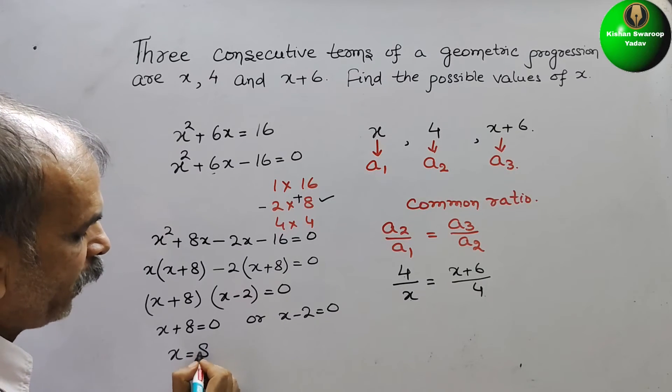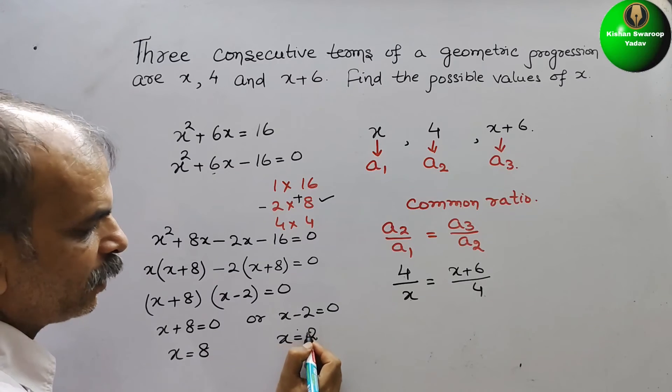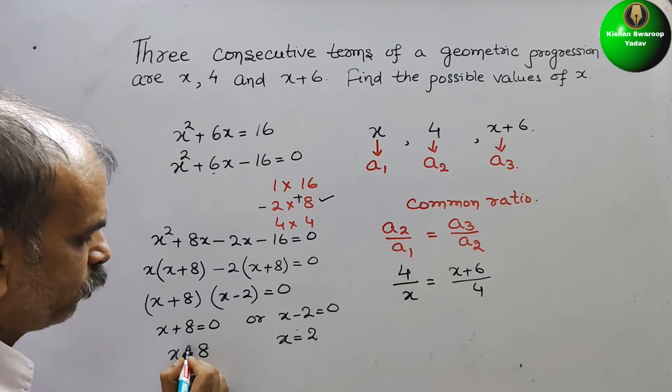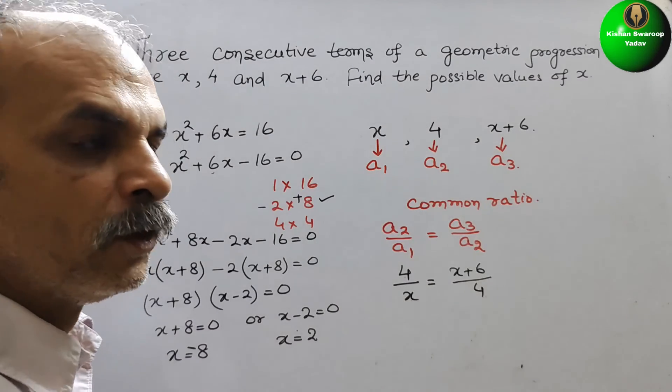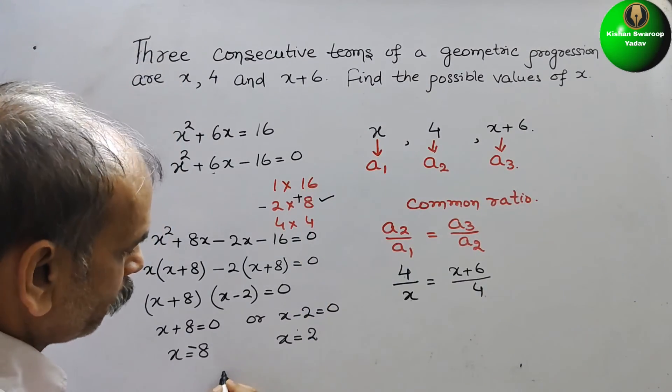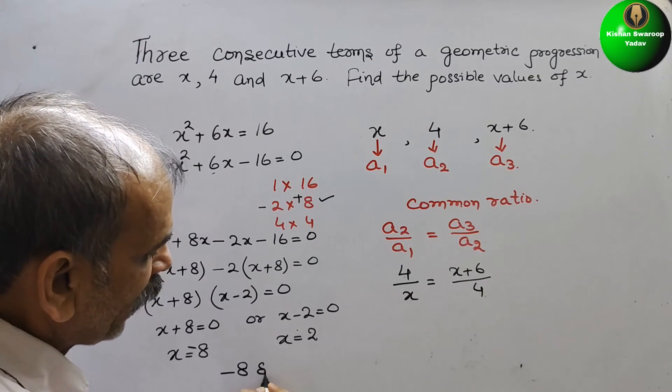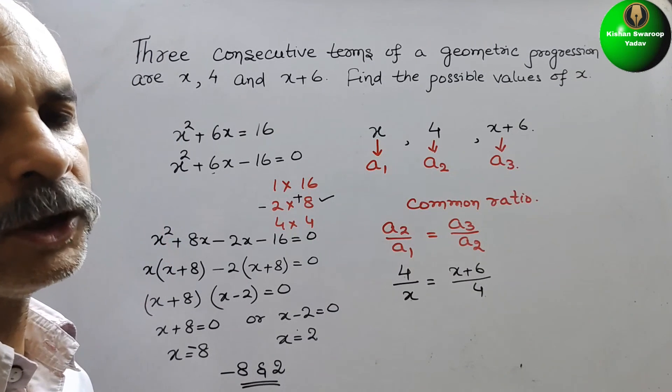Here you will get x equals negative 8, and here you will get x equals 2. Therefore the two possible values of x are negative 8 and 2. This is your answer. Thank you.